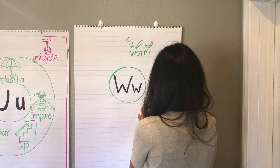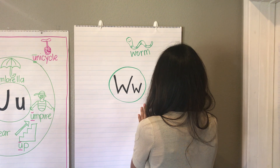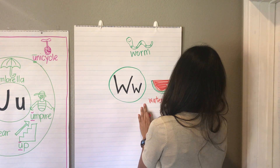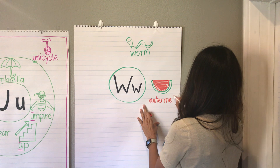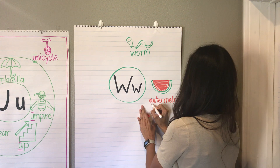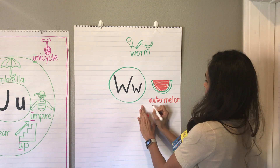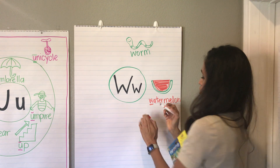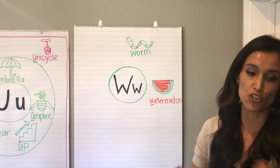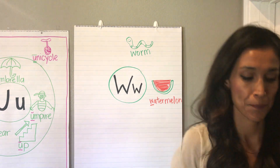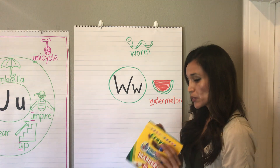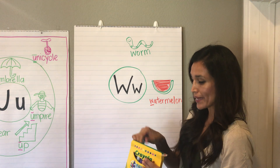I'm going to color that in really quickly. I'm going to add the word watermelon. This is actually a compound word — it has two words in it: water and melon. It starts with the letter W. I'm going to add the seeds in just a sec. We'll add those in black.